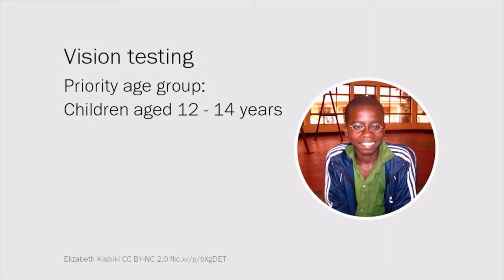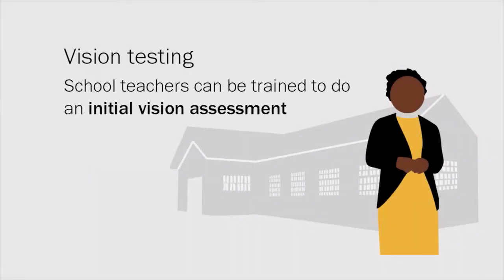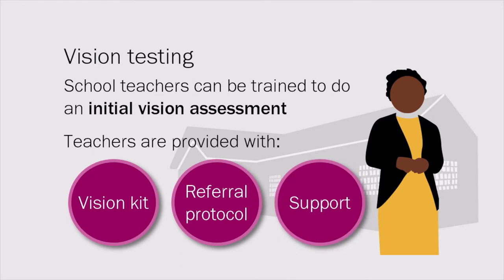The priority age group that needs vision testing at least once is children aged 12 to 14 years, to detect myopia of puberty. Younger age groups are tested if resources are available. Each eye is tested and vision less than 6/12 in either eye is defined as a case for referral and further testing. A lower cut-off of less than 1 diopter correction often results in poor adherence to spectacle wearing amongst children. In some settings, school teachers can be trained to do an initial visual assessment, provided with a vision kit, referral protocol, and support from local optometry services.